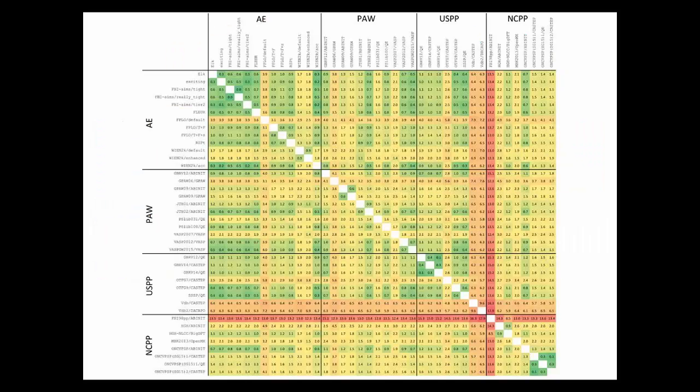If you do that not once, but for 40 different combinations of methods and codes, you get this matrix, which expresses all these pairwise delta values. It's color coded such that green is small and red is large, yellow is intermediate. So don't try to read this. We will zoom in on a few sections and comment on these.